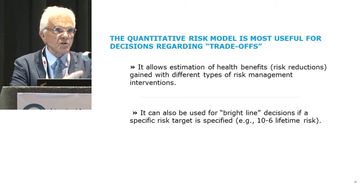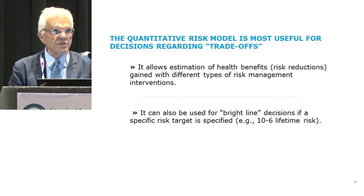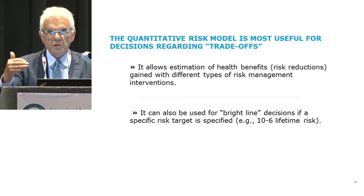There are some cancer decisions made on a bright line analysis as well. A 10⁻⁶ lifetime risk is often considered for carcinogens as a bright line between safe and unsafe levels.